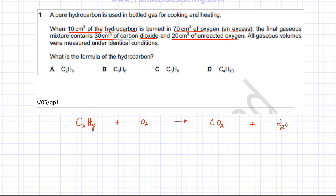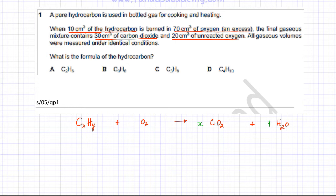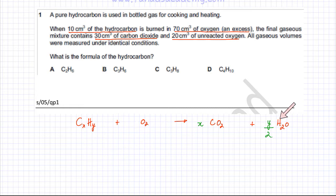You balance this equation in terms of X and Y. There are X carbons, so there should be X carbon dioxide molecules on the right side. If you have Y hydrogens, the number of water molecules is half that number, so there would be Y/2 water molecules on the right-hand side. For example, with 4 hydrogens (H4), there would be 2 water molecules.